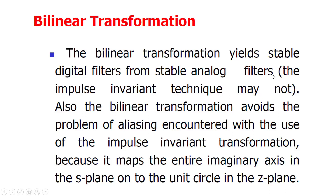In the bilinear transformation technique we follow the same approach as in the impulse invariant technique, where we take the analog filter transfer function and convert it into a digital filter. The drawback of the impulse invariant technique was aliasing, and we will be able to overcome that aliasing problem in the bilinear transformation technique. Also, the bilinear transformation avoids the problem of aliasing encountered with the impulse invariant transformation.